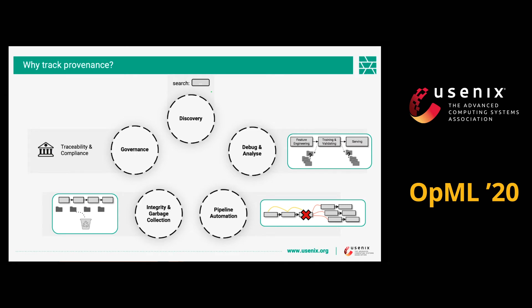The last use case is integrity and garbage collection. Each of the pipelines produces and uses a lot of files from the file system. If a user is trying to delete an artifact that might be an input for one of the stages, we might want to warn him not to break that pipeline. Or if a pipeline is invalid, we might help the user clean up the whole pipeline — the platform itself knows all the input, temporary files, and output, and whether they are still in use or not.